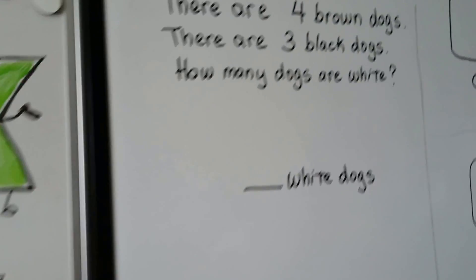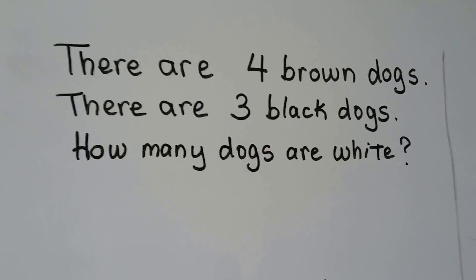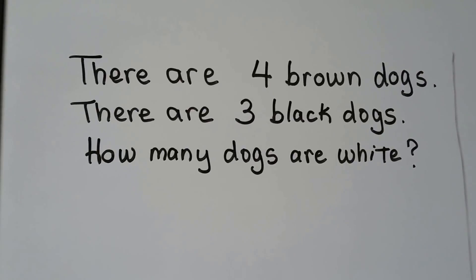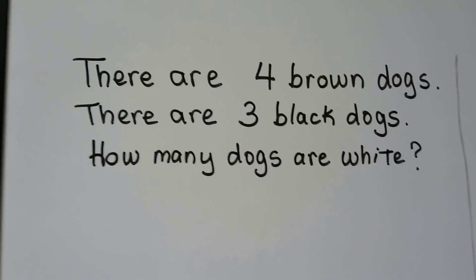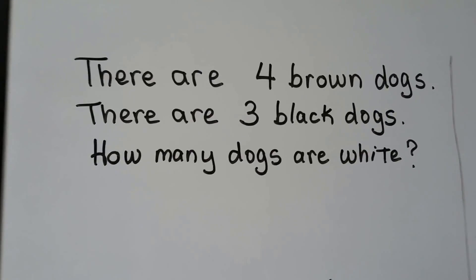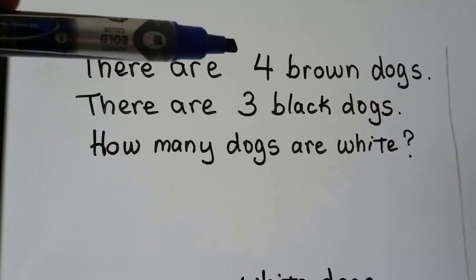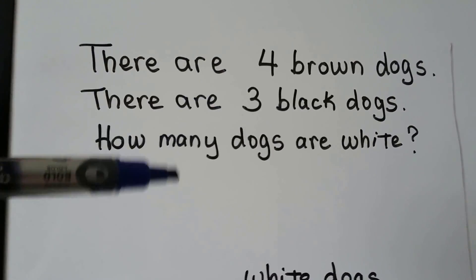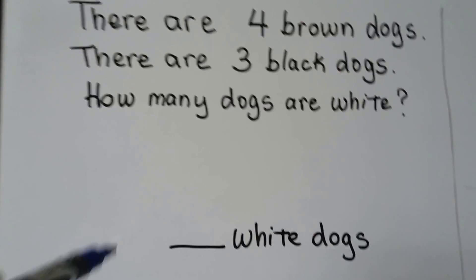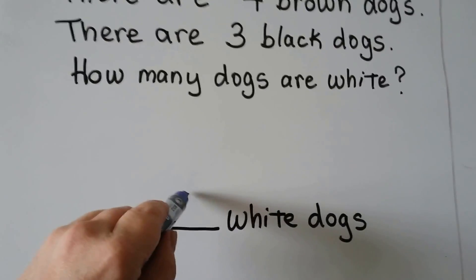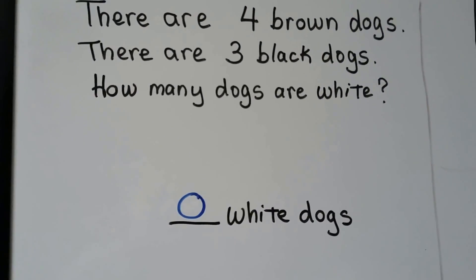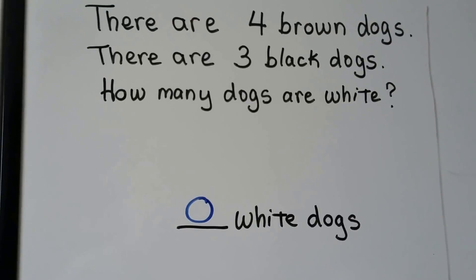There are four brown dogs and three black dogs. How many dogs are white? There are four brown ones and three black ones, but it doesn't say there are any white dogs — so there are zero white dogs. There are only brown and black ones.